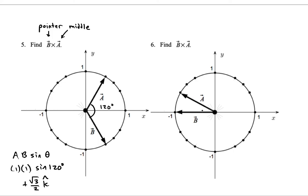We'll have negative one half K hat for this one, because it's 1 times 1 times sine 30. We always use the smallest angle between the vectors. The mathematical definition of the cross product uses an angle between 0 and 180 inclusive — you don't want negative angles or angles more than 180, just the smallest between them. And you don't use any negative magnitudes either — the direction is decided by the right-hand rule.